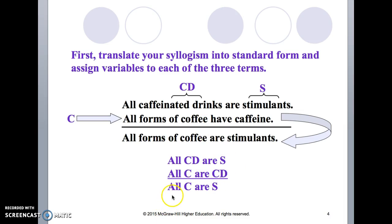Premise one, all CD are S. Premise two, all C are CD. The conclusion we can rewrite all C are S. You can see how we can retranslate this standard categorical form syllogism just by using variables. That's our first step.